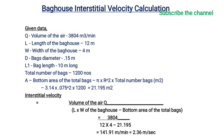Now we understand how to calculate the interstitial velocity in the bag house. Given data: Q — volume of air 3,804 cubic meters per minute; L — length of the bag house 12 meters; W — width of the bag house 4 meters; D — bag diameter 0.15 meters; one bag length 10 meters; total number of bags 1,200. First, we calculate the bottom area of the total bags: A equals pi multiplied by R squared multiplied by the total number of bags. Based on this data and formula, the bottom area of the total bags is 21.195 square meters.